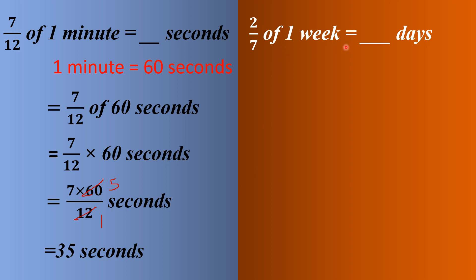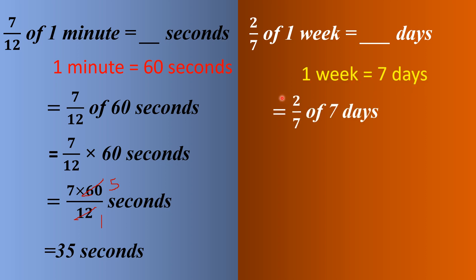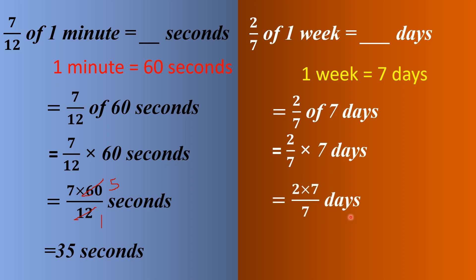Next question: 2/7 of 1 week equals how many days? We know 1 week has 7 days, so the question becomes 2/7 of 7 days. Replacing 'of' with multiply: 2/7 multiplied by 7 days, giving 2 into 7 by 7. The 7 in the numerator and denominator cancel each other, so the final answer is 2 days.